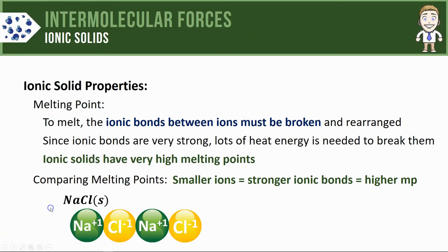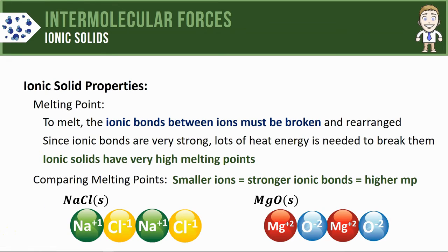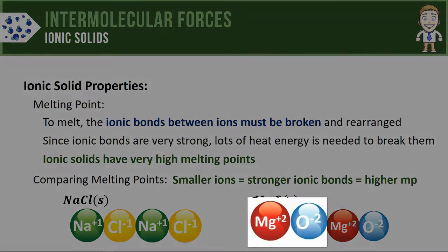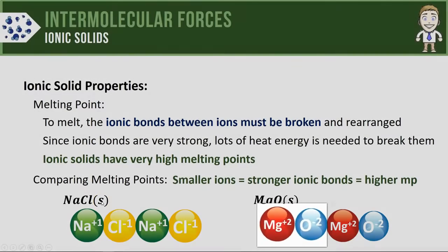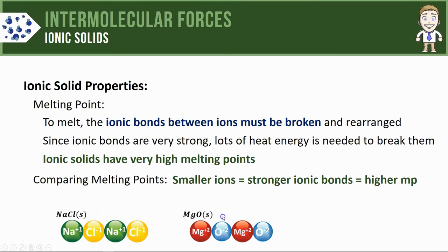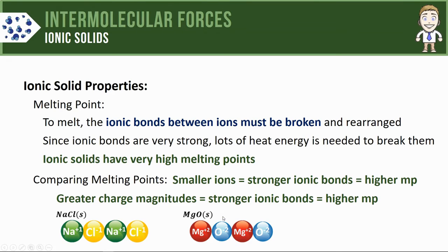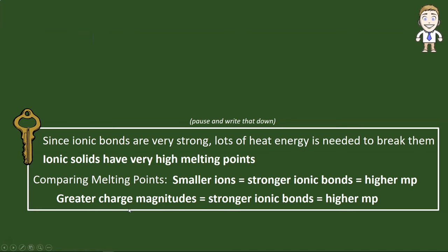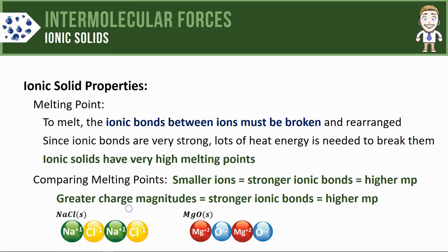Let's also compare sodium chloride to magnesium oxide. Magnesium oxide is an ionic substance where the ions have +2 and −2 charges. Since the charge magnitudes are greater, a stronger attraction exists between those ions than between sodium and chloride ions. We can summarize this by saying greater charge magnitudes lead to stronger ionic bonding and higher melting points.